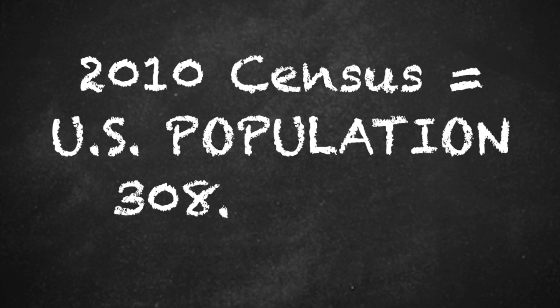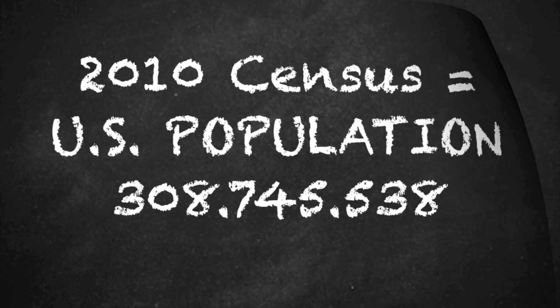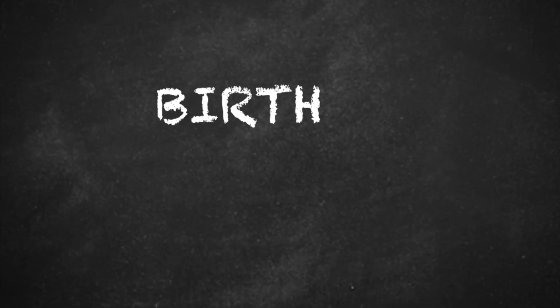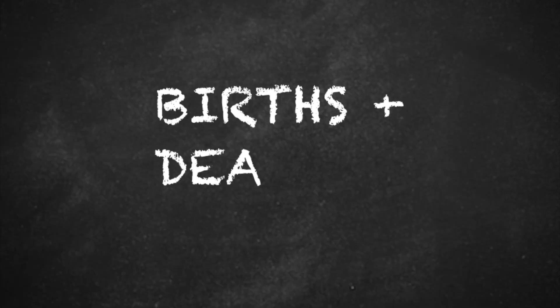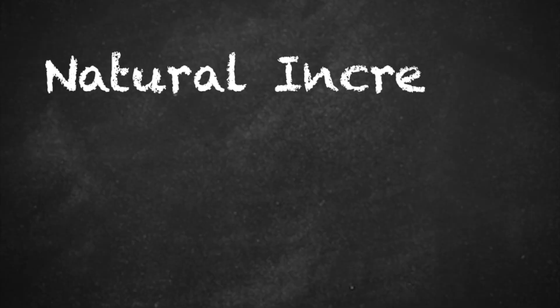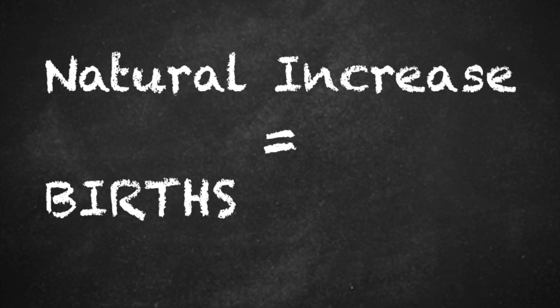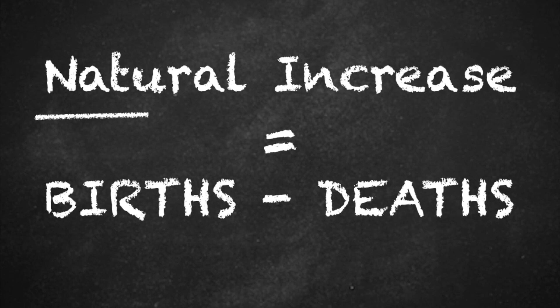There are only a few ways that the number of people in the population can change. Births add new residents, while deaths subtract people from the population. The difference between births and deaths is referred to as natural increase by demographers. This is one way that the population can grow.